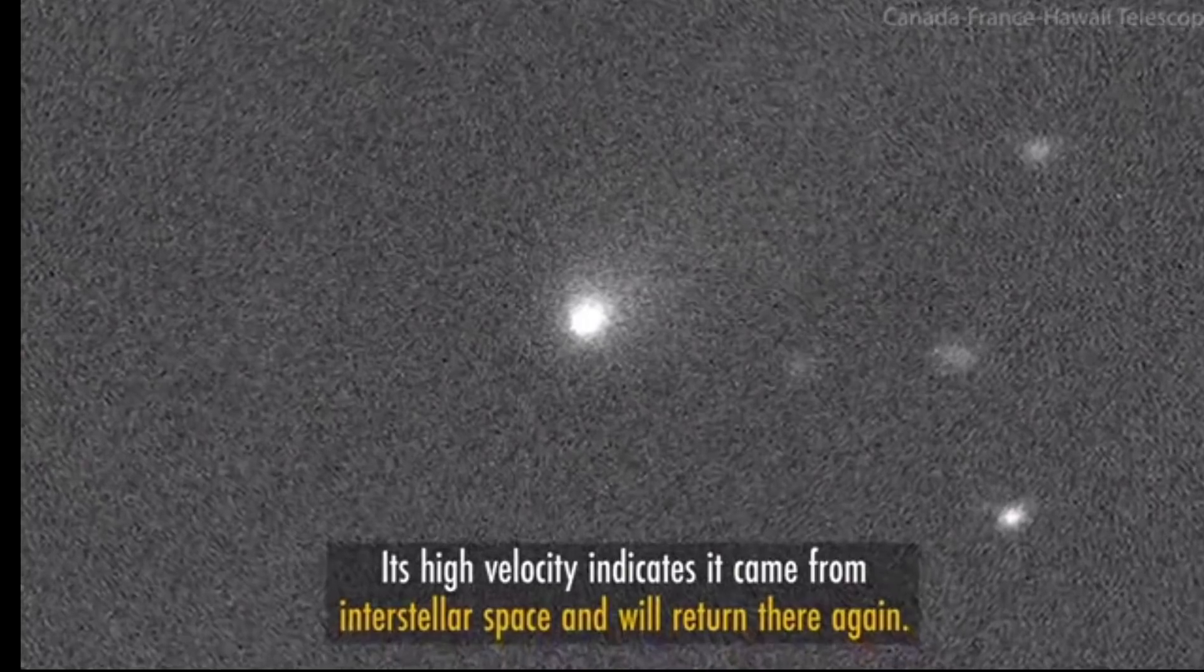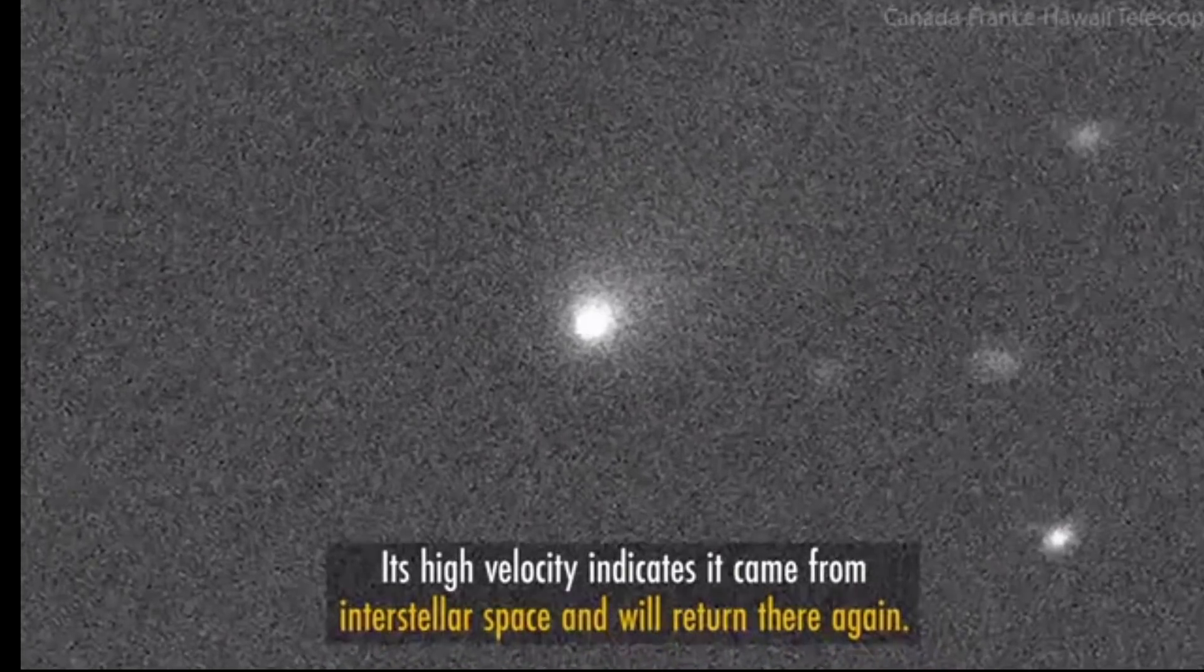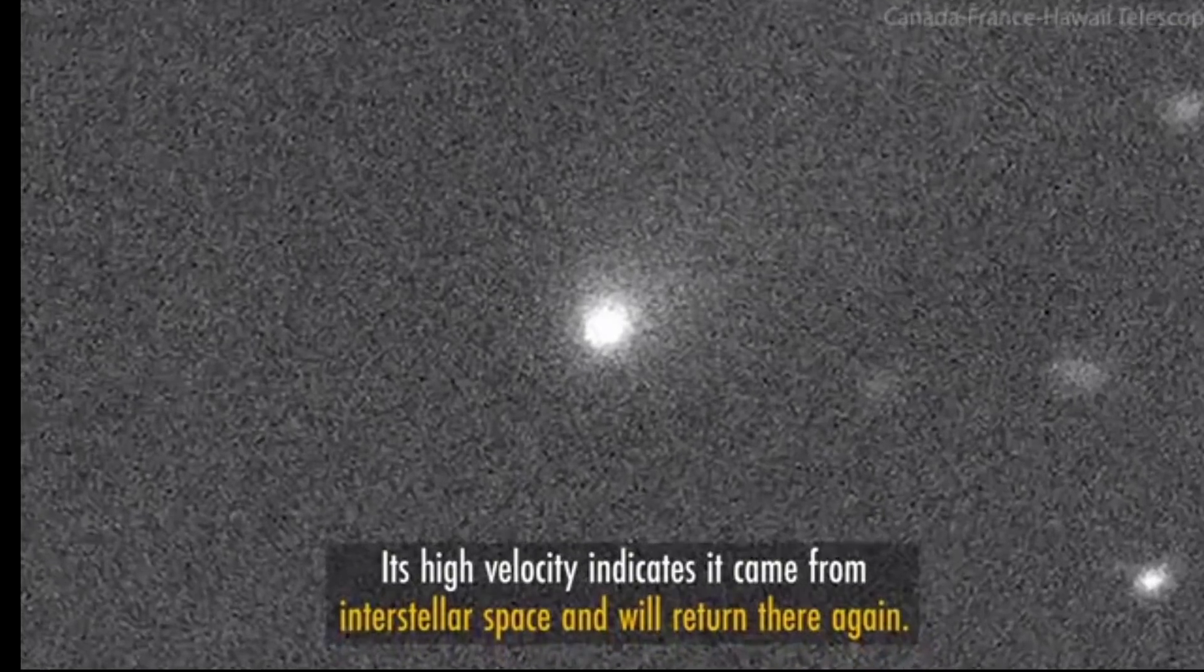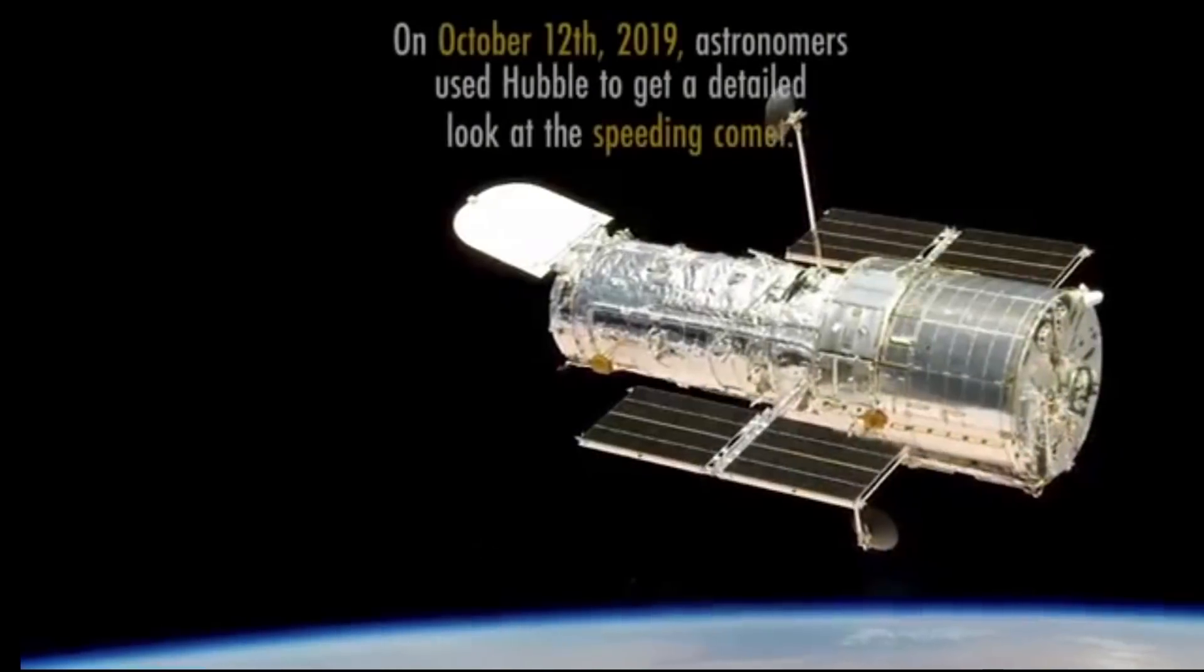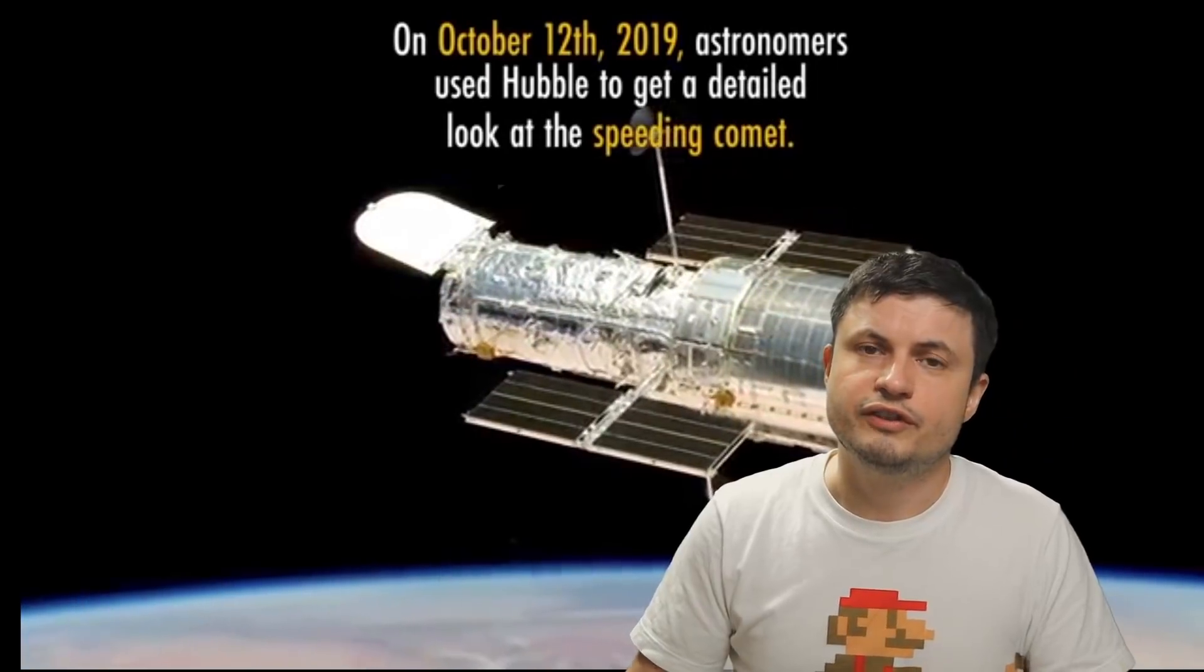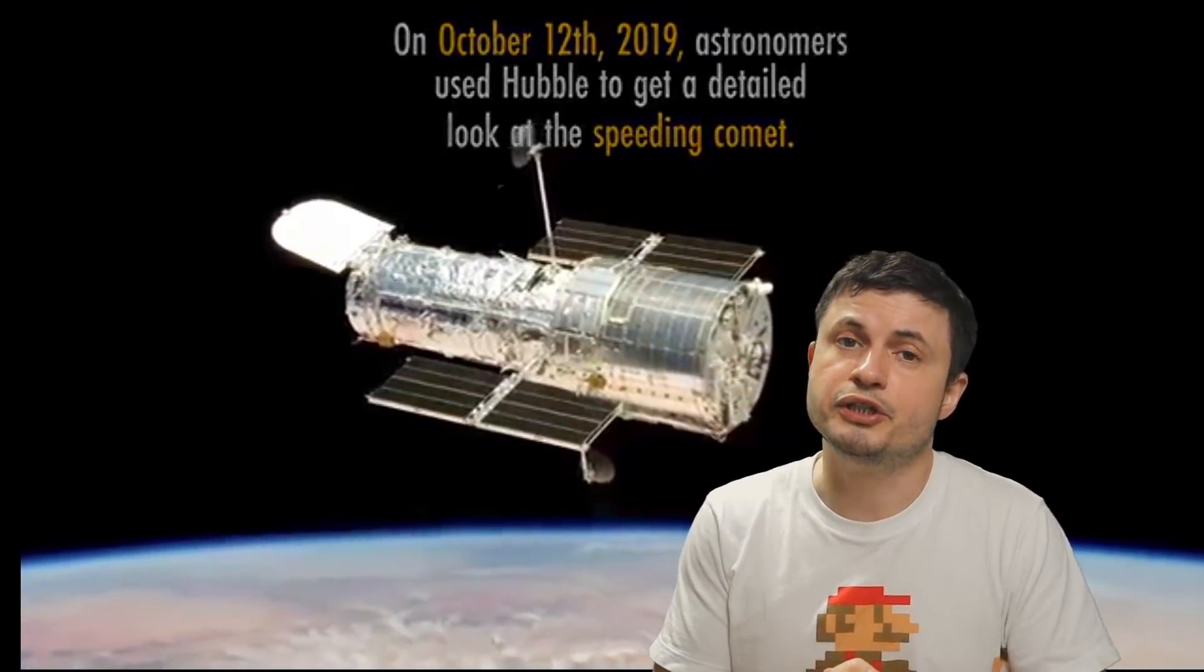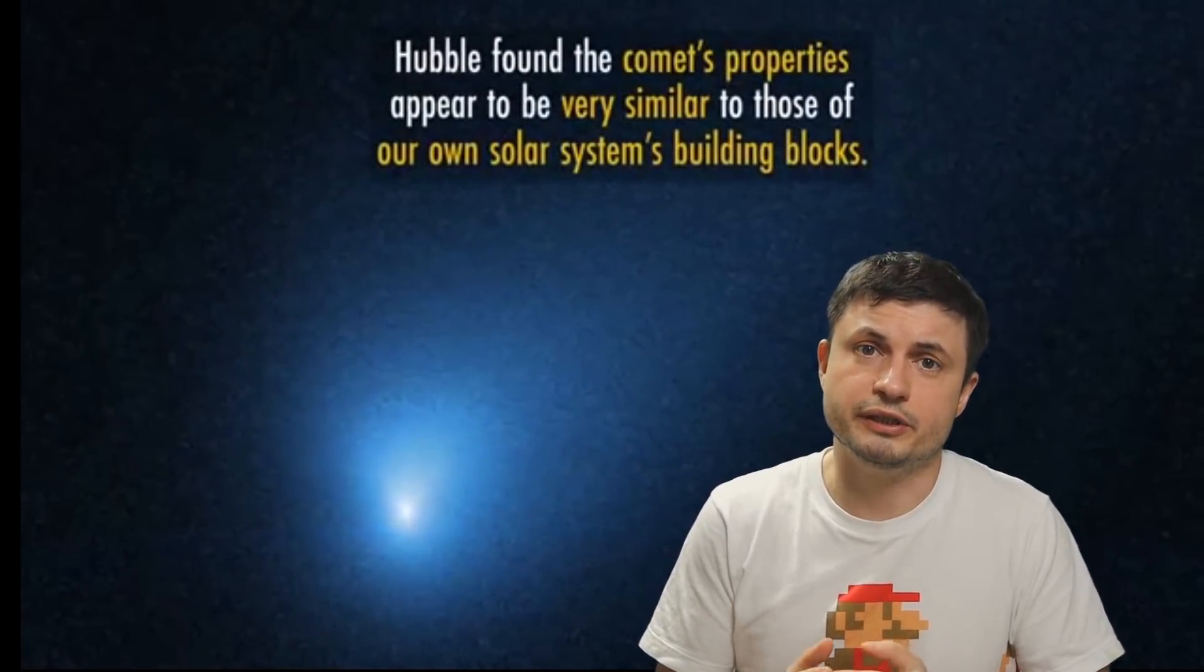For example, today we know that it was almost completely depleted in water and had almost no diatomic carbon. But it was enriched in carbon monoxide and had a lot of amines present on the surface. All of this was detected by Hubble telescope and a lot of other telescopes analyzing the emissions coming from the comet a few months afterwards.